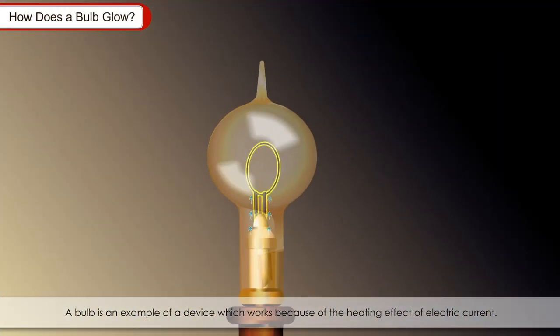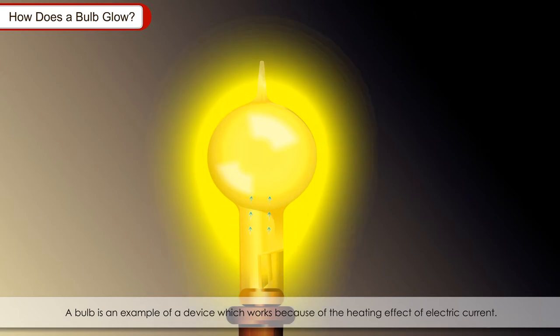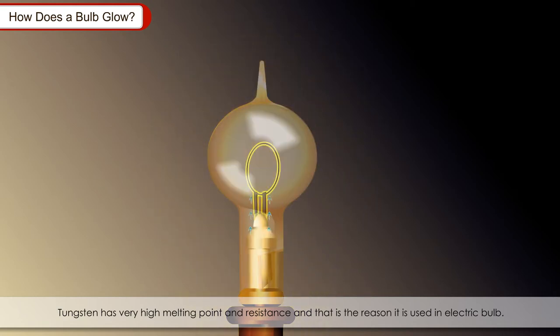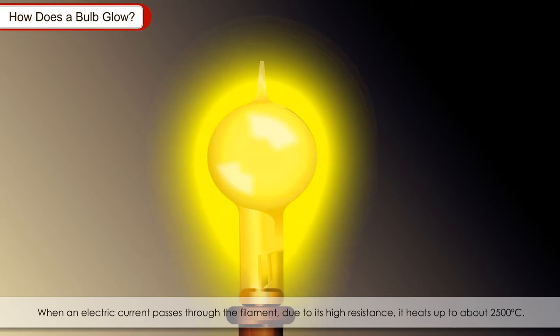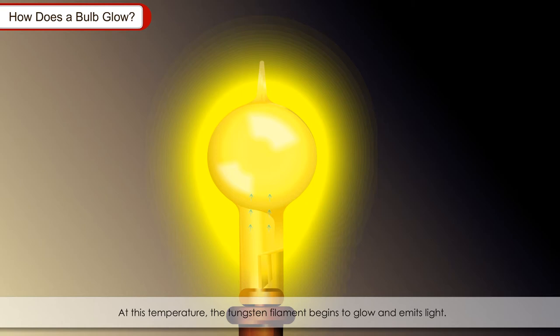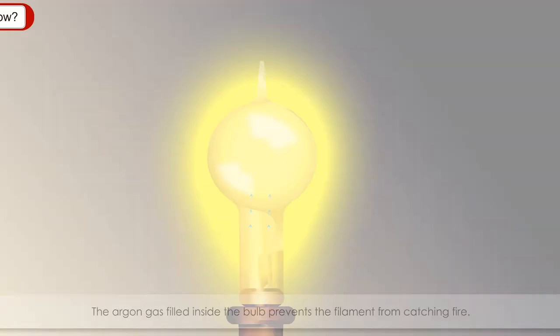How does a bulb glow? A bulb is an example of a device which works because of the heating effect of electric current. It has a partial vacuum, argon gas and a filament made of tungsten metal. Tungsten has very high melting point and resistance. That is the reason it is used in electric bulb. When an electric current passes through the filament, due to its high resistance, it heats up to about 2500 degrees Celsius. At this temperature, the tungsten filament begins to glow and emits light. The argon gas filled inside the bulb prevents the filament from catching fire.